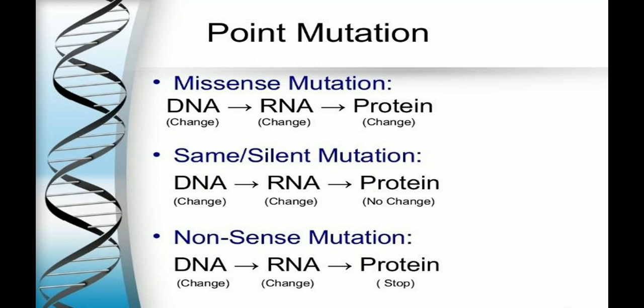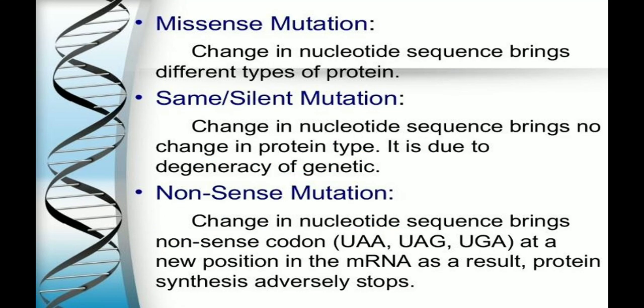If there is a nonsense mutation, the DNA will change and the RNA will change, and the proteins will stop. Missense mutation means a change in nucleotide sequence brings different types of proteins.